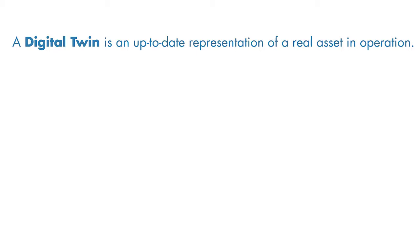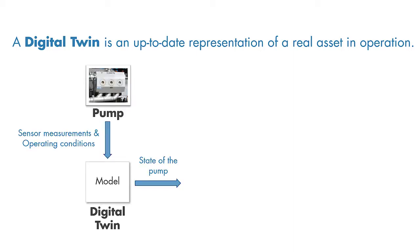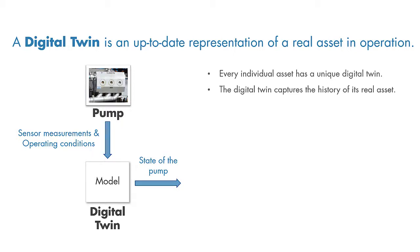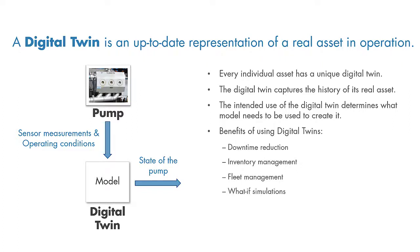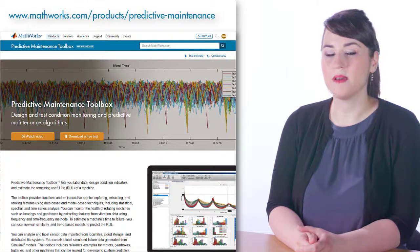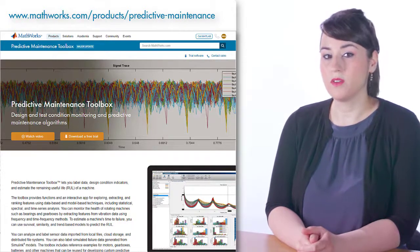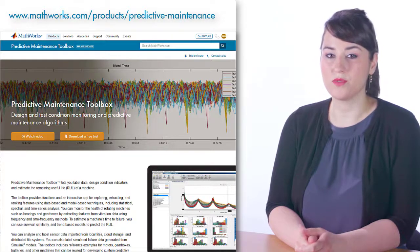In summary, a digital twin is an up-to-date representation of an asset in operation. Data captured from the asset and the environment are periodically sent to the digital twin, which is updated and tuned to its real asset. Every individual asset has a unique digital twin that also captures the history of its real asset. The modeling method used to create a digital twin is driven by the intended use. By using digital twins, you can predict failures in advance and reduce downtime, better manage spare part inventories, monitor and manage your fleet, run what-if simulations, and optimize operations. For more information on designing predictive maintenance algorithms with MATLAB and Simulink, check out the product page, where you'll also find other products you can use to design models for creating digital twins.